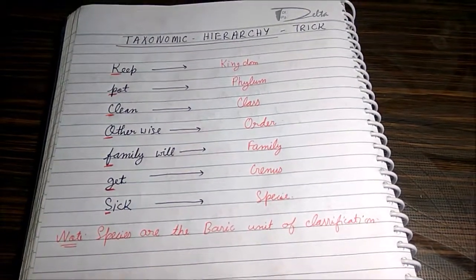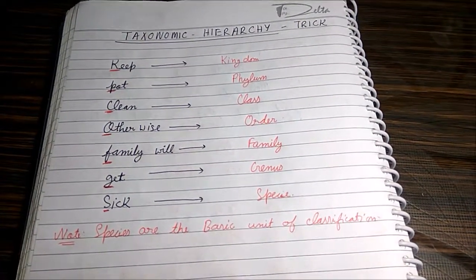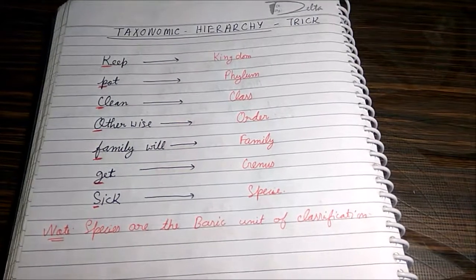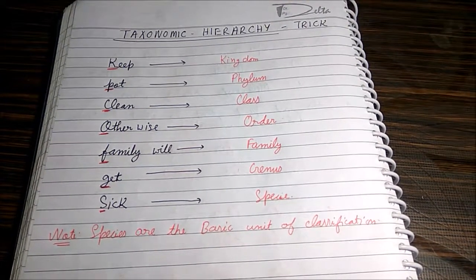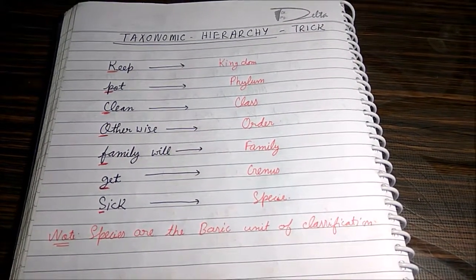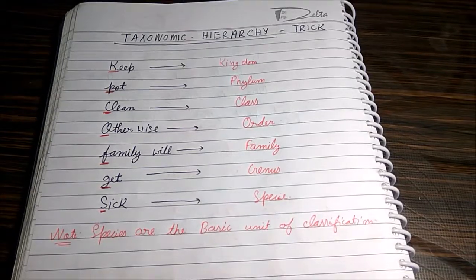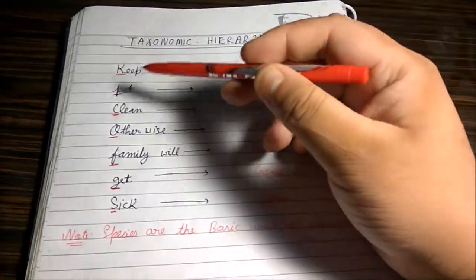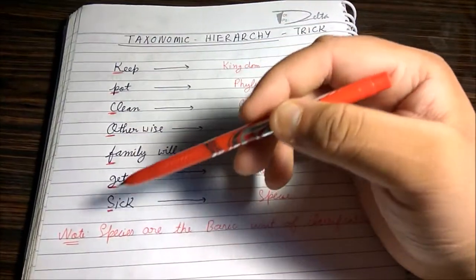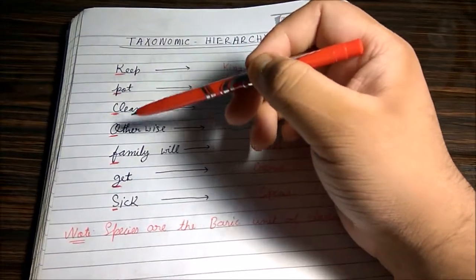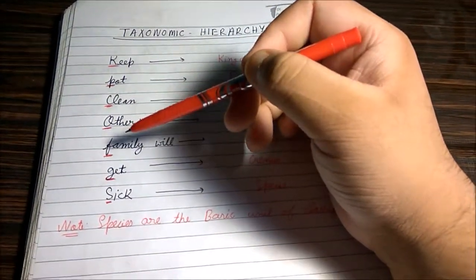Hello everyone, welcome to my channel Neat Notes. Today I will explain a trick to help you remember the taxonomical hierarchy sequence. Our trick is this whole sentence: 'Keep pot clean otherwise family will get sick.'